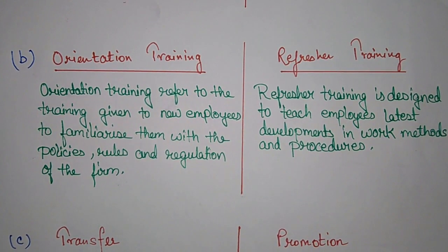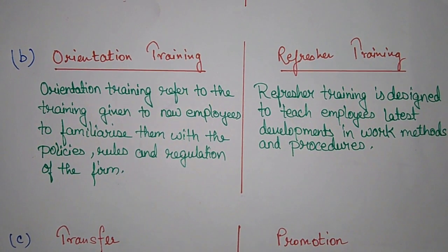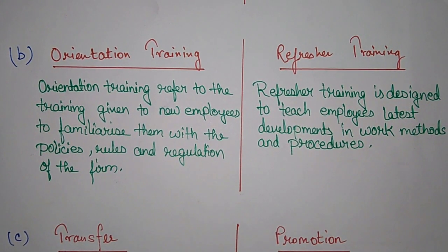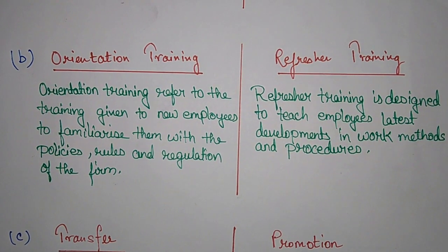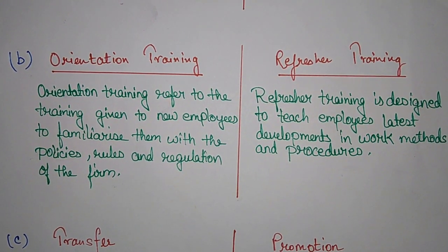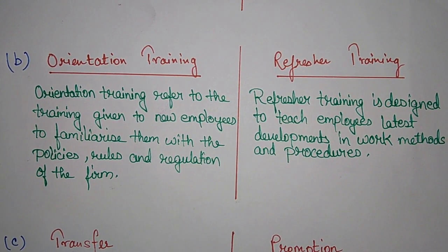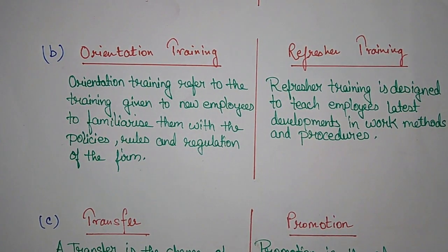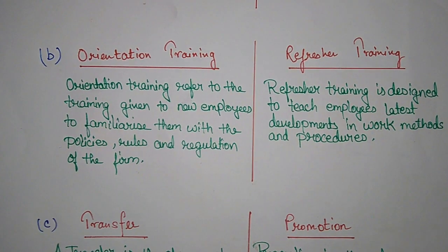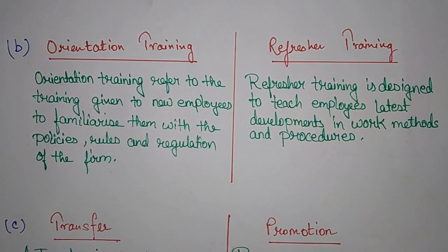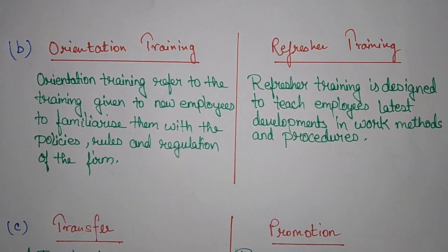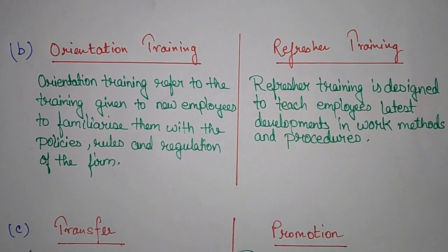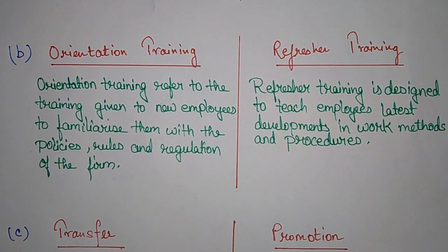Part B — Orientation training and refresher training. Orientation training refers to the training given to new employees to familiarize them with the policies, rules, and regulations of the firm. Refresher training is designed to teach employees the latest developments in work methods and procedures. Orientation training is for new recruits to learn the firm's rules and regulations, whereas refresher training is given to existing employees.